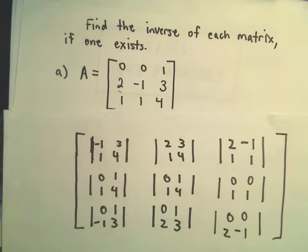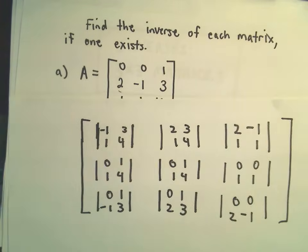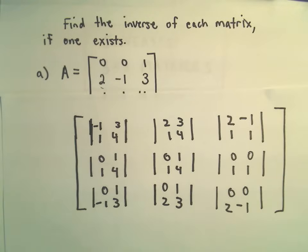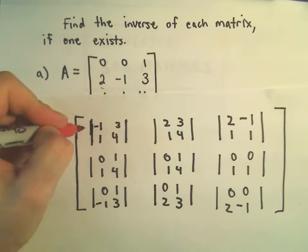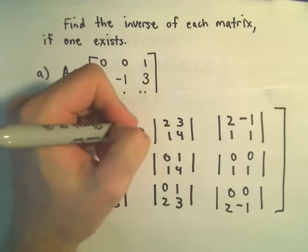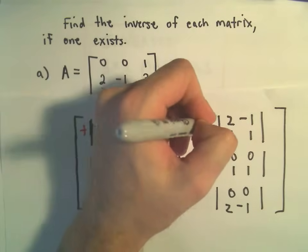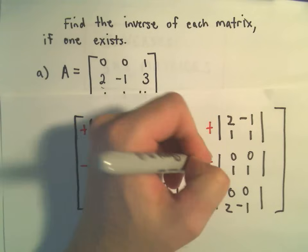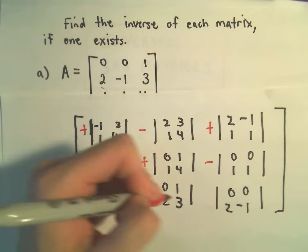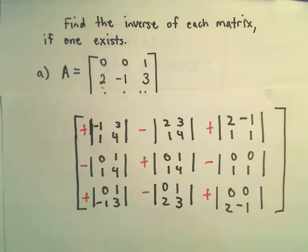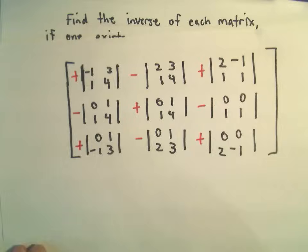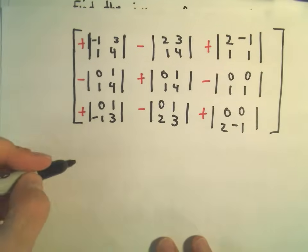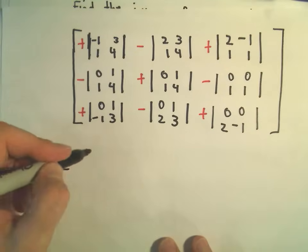We still have to put our signs in. The sign pattern just alternates: positive, negative, positive, negative, positive, negative, positive, negative, positive. Now I'm going to calculate the values of all these determinants.